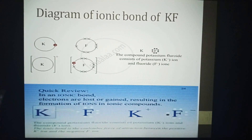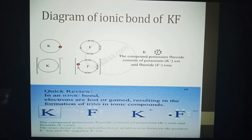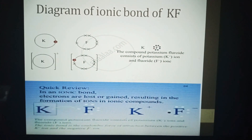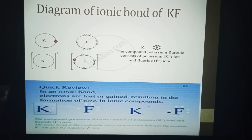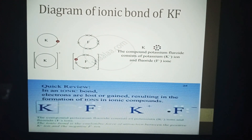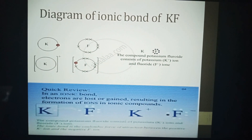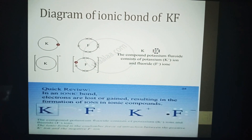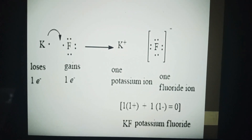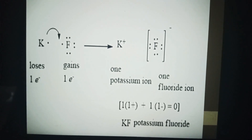Here is the diagram of the ionic bond of KF — K is potassium and F is fluorine, so the compound is potassium fluoride. Potassium fluoride consists of potassium ion K⁺ and fluoride ion F⁻. You will check the atomic number from the periodic table, make the electron shells, and then make the diagram of KF. Potassium loses its electron and fluoride gains it.